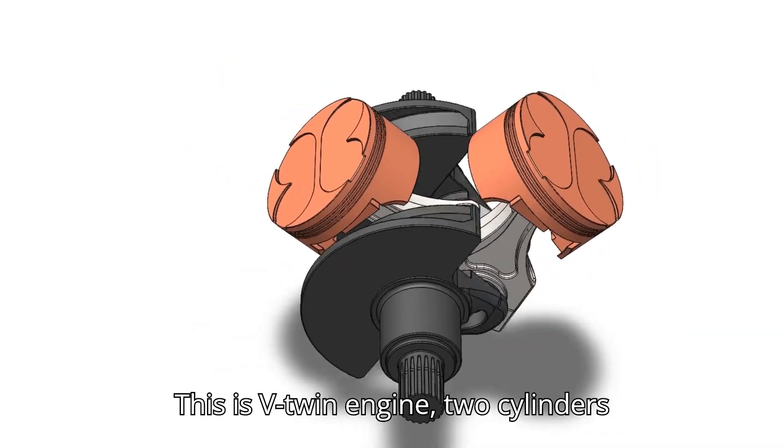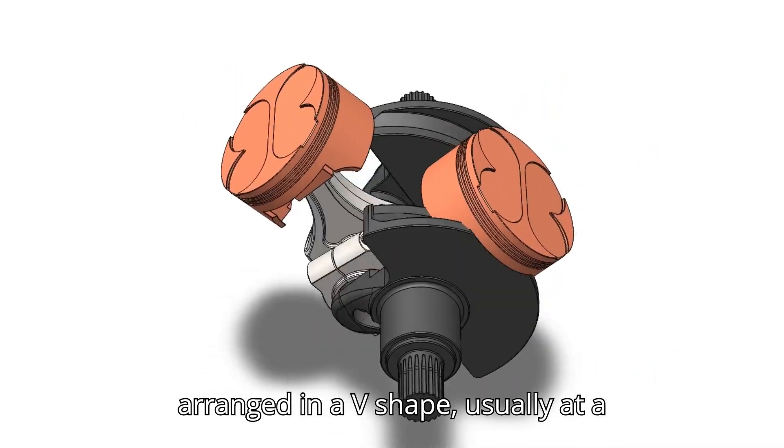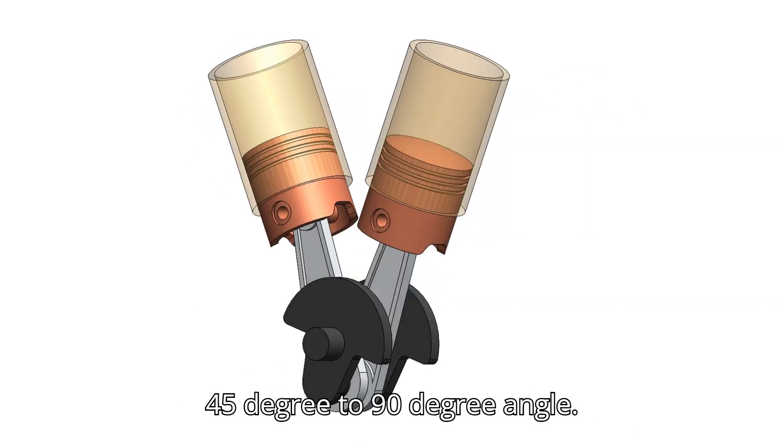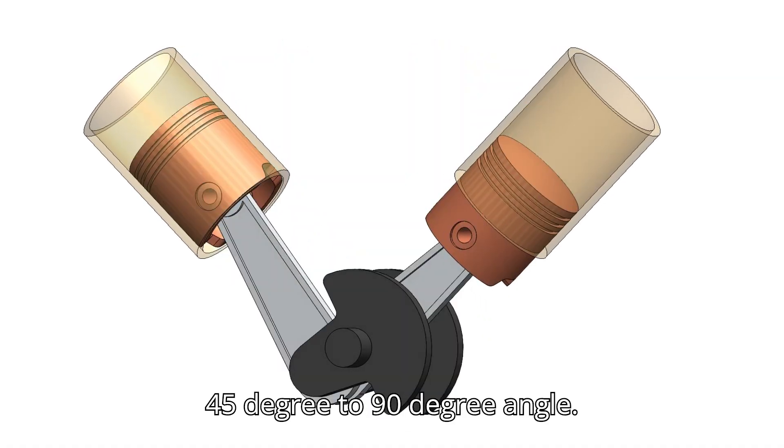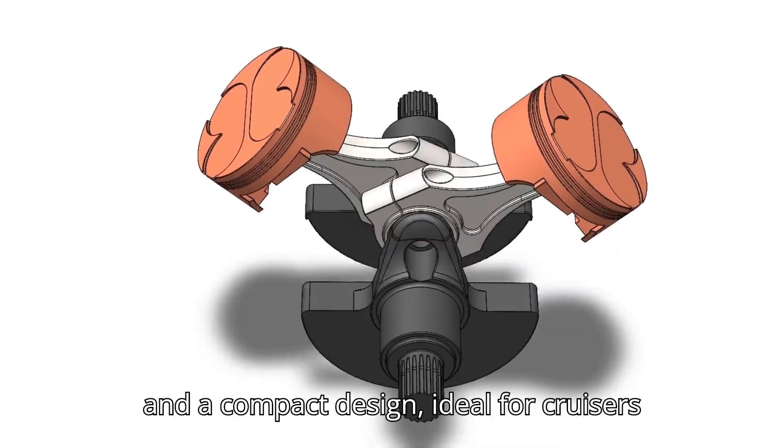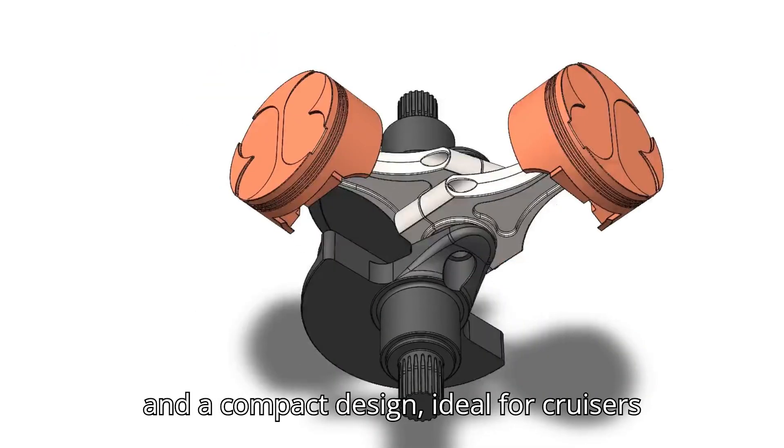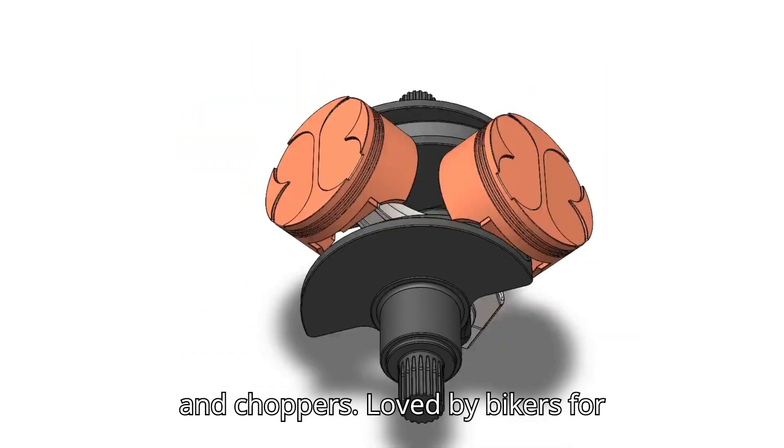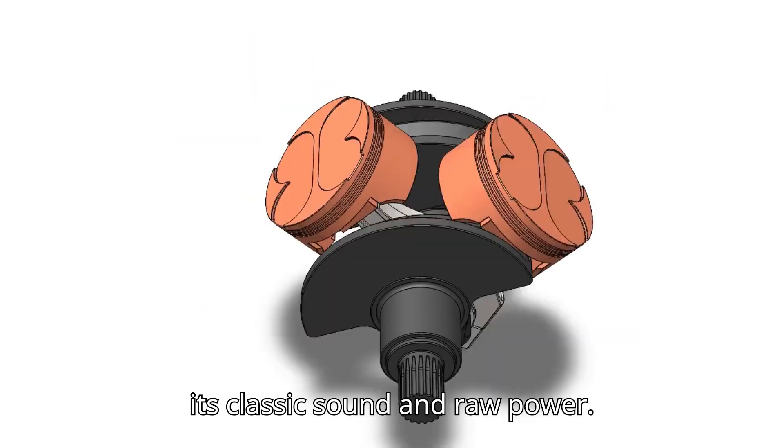This is a V-twin engine, two cylinders arranged in a V-shape, usually at a 45 degree to 90 degree angle. It delivers strong torque, a deep rumble and a compact design, ideal for cruisers and choppers. Loved by bikers for its classic sound and raw power.